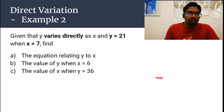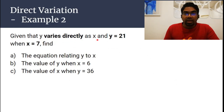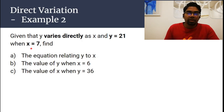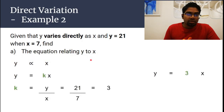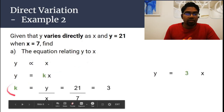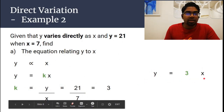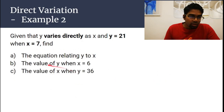Here is another type of question. Given y varies directly as x, y is 21 and x is 7. The first part asks us to find the equation relating y to x. Finding k: 21 over 7 gives us 3, so the equation is y equals 3x. The second part asks: find the value of y when x is 6.